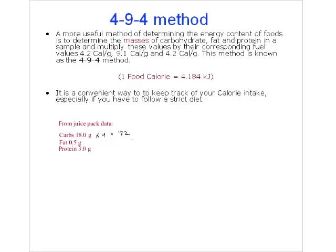Then multiply fat by 9 or 9.1: 0.5 g × 9 = 4.5 calories. Then multiply protein by 4.2: 3 g × 4 = 12 calories. Add up the energy from all sources and we get about 88.5 calories. We're a little high - the juice pack says 80 calories - but that's because it depends on the type of carb, fat, or protein. It's just an estimate, but we're in the ballpark.